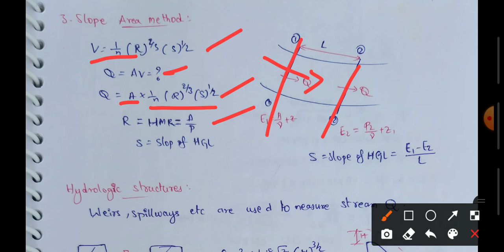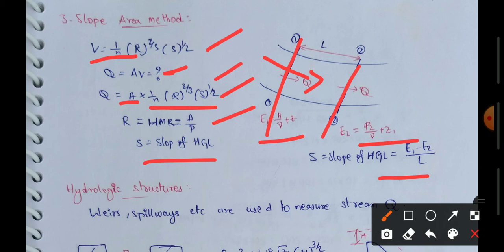In the slope area method, A is the wetted area and P is the wetted perimeter. The slope S equals the slope of the HGL, where HGL equals (E₁ minus E₂) divided by L. E₁ equals P₁/ρ plus Z₁ and E₂ equals P₂/ρ plus Z₂, from Bernoulli's equation. Using these formulas, we find velocity and discharge.